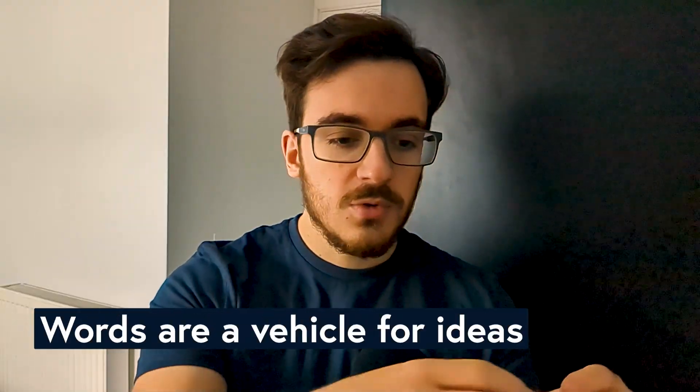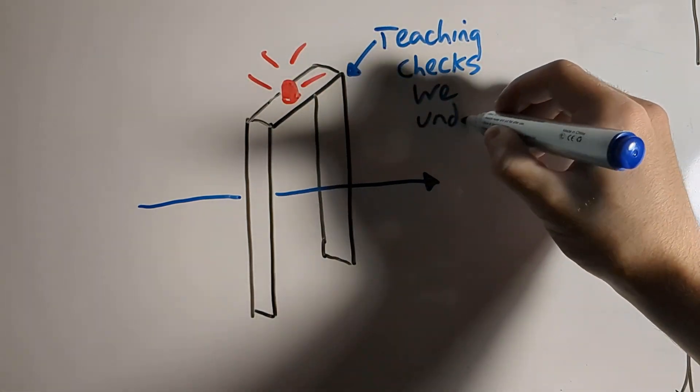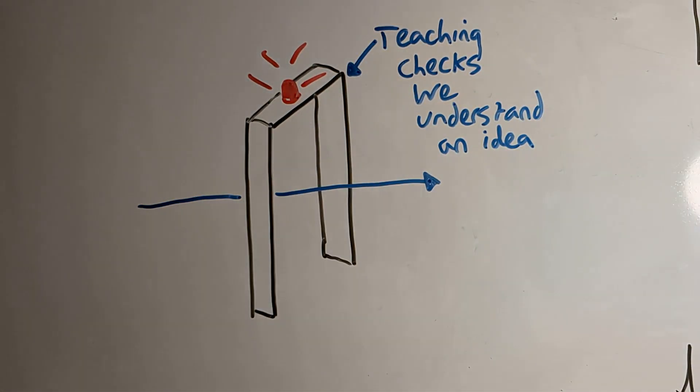If we can only reiterate the words — if asked to explain something and we can just repeat it back or rearrange the words a bit — we haven't truly understood it. But if we take that same sentence and go deeper behind the words, understand the idea and the concept behind it, and then use any words we want to explain that, that shows we've not only processed the words on the page but the idea behind it. And that's what it means to truly understand something.